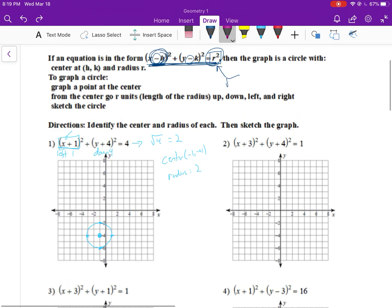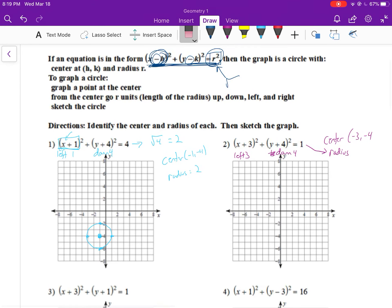Number two, this is going to move left three and down four, because it's the opposite of that. So our center will be at (-3, -4). And then the radius, we take the square root of one, which is just one.